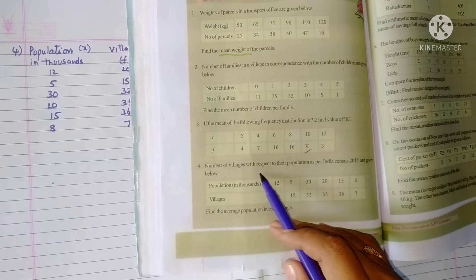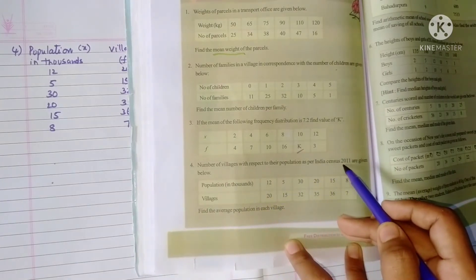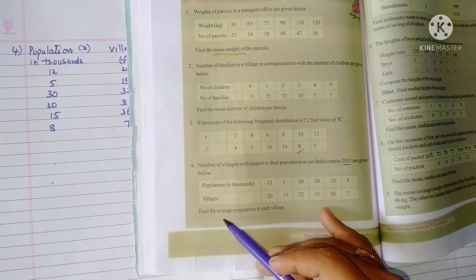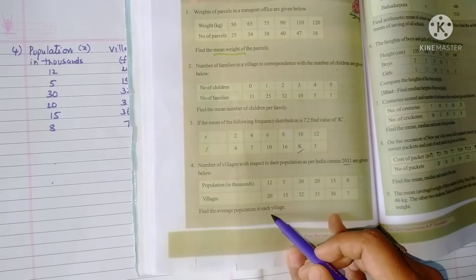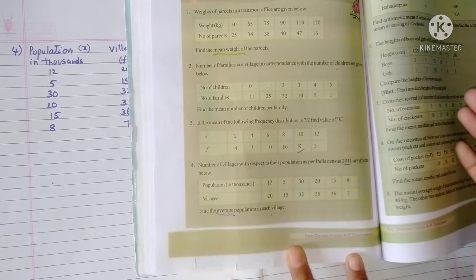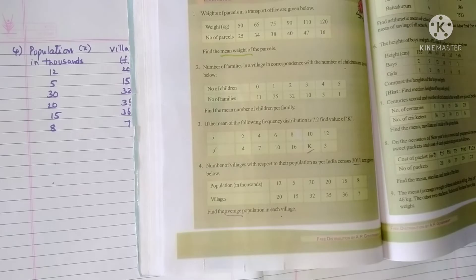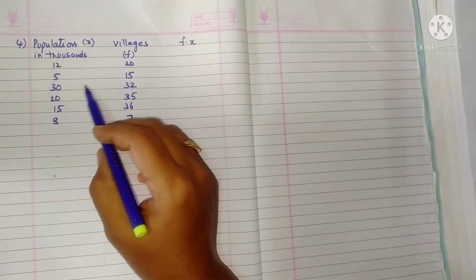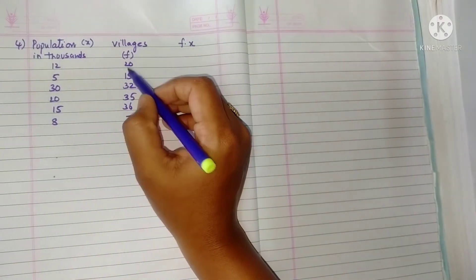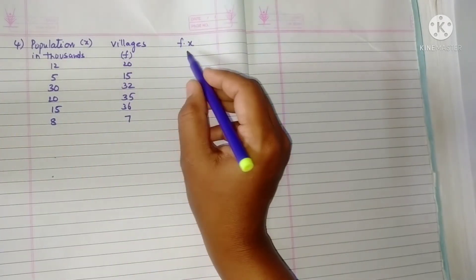Fourth problem: Number of villages with respect to their population as per India Census 2011 are given below. Find the average population in each village. Average or mean, both are same. So here we want to find out the mean. We know the formula, so villages we took as frequency and this as x.